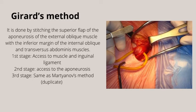Next, we have Girard's method. It is done by stitching the superior flap of the upper aponeurosis of the external oblique muscle with the inferior margin of the internal oblique and transversus abdominis muscles. The first stage is access to the muscle and the inguinal ligament. The second stage is access to the upper aponeurosis. The third stage is the same as Martianov's method: duplication.